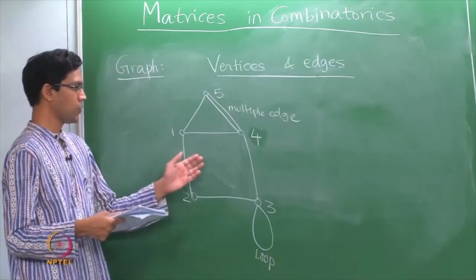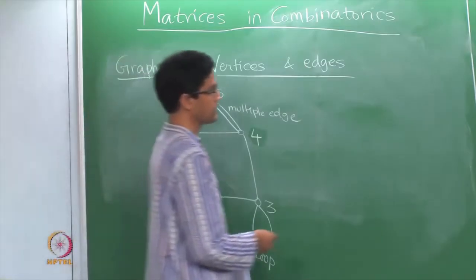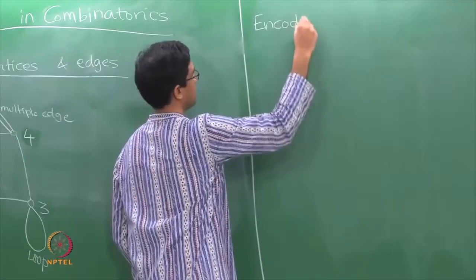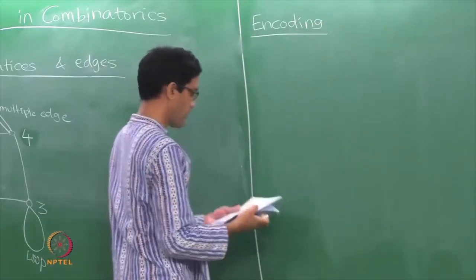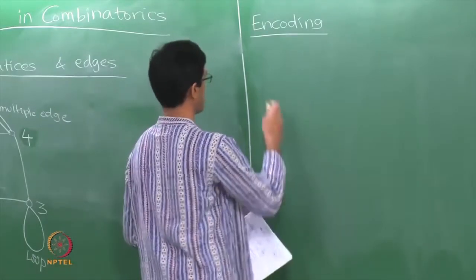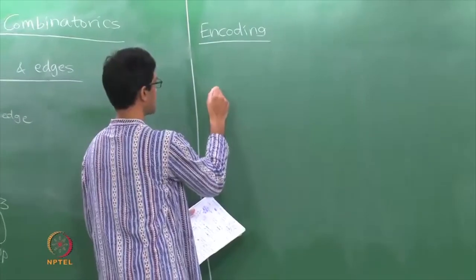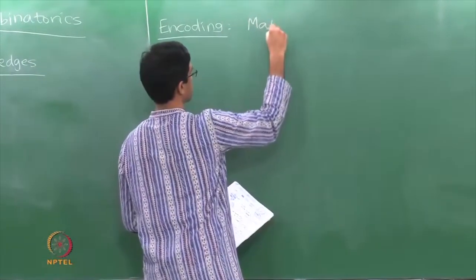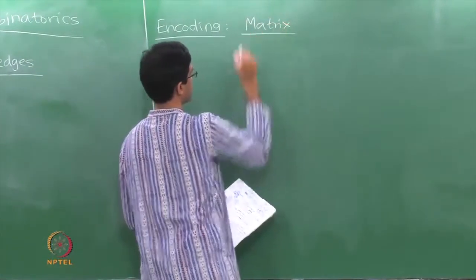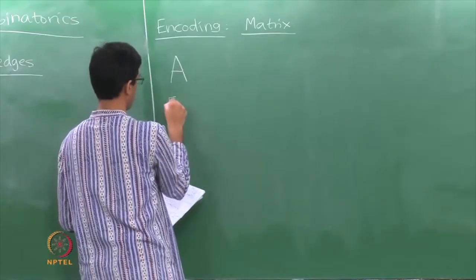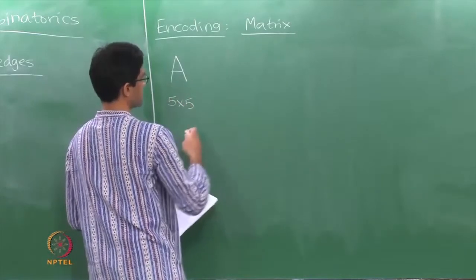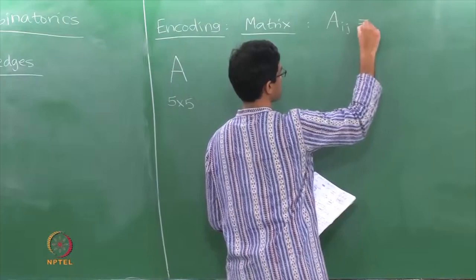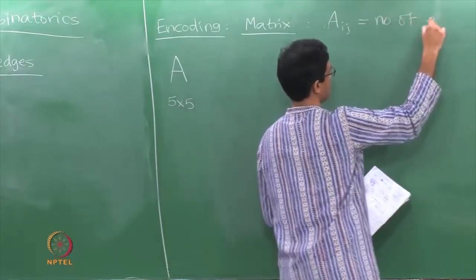Another way of saying it: let us encode the basic data of this graph. The encoding is in the form of a matrix — let us call this matrix A. In this case it is a 5×5 matrix. The size of the matrix is just the number of vertices. The (i, j)-th entry of this matrix is just the number of edges between vertex i and vertex j.